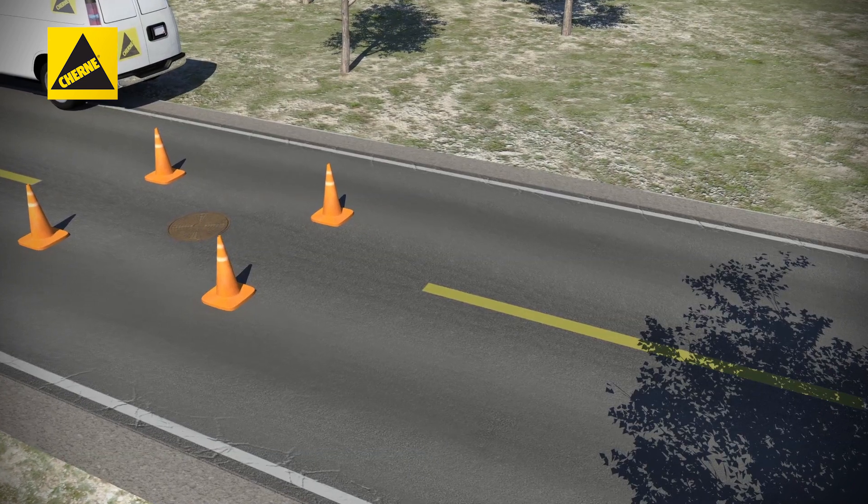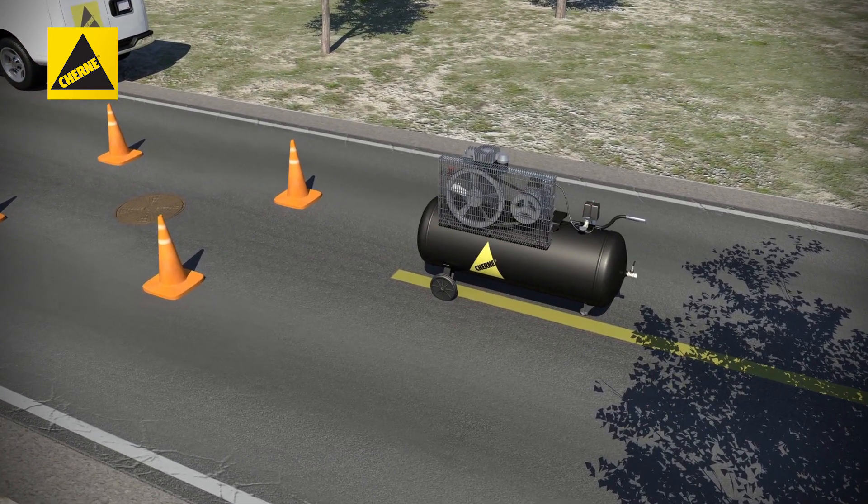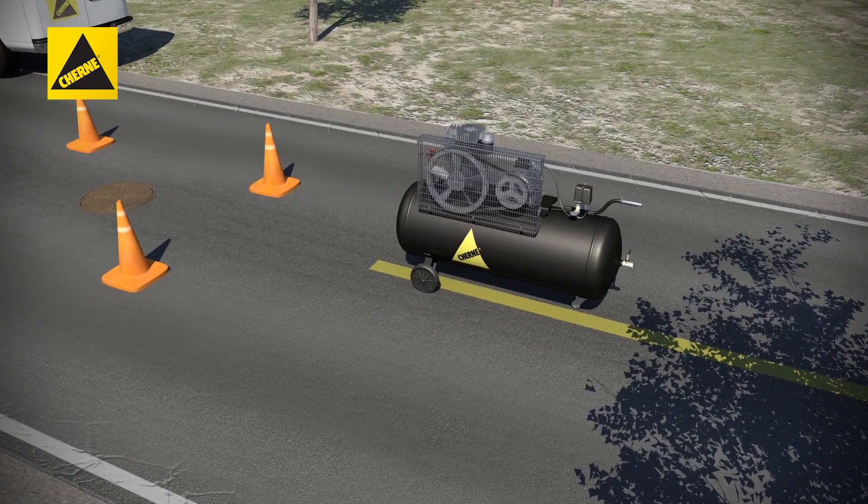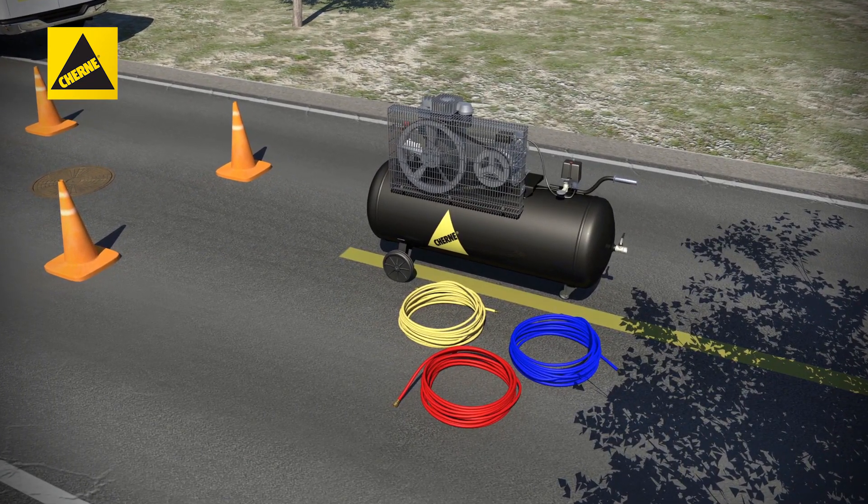Before joint testing begins, an air compressor or ample water supply should be located above ground with a sufficient length of air hose capable of reaching all joints to be tested.